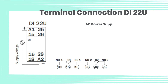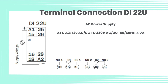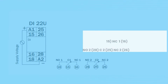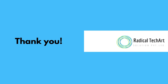Terminal connection DI22U. AC power supply: A1 and A2, 12V AC/DC to 240V AC, 50/60 Hz, 4W. Relay terminals: NO1-18, C1-15, NC1-16. NO2-28, C2-25, NC2-26.